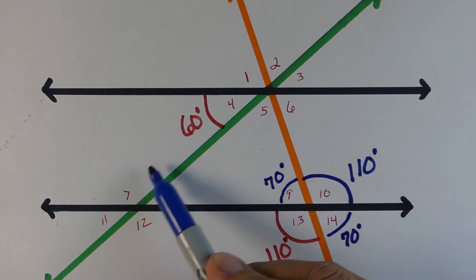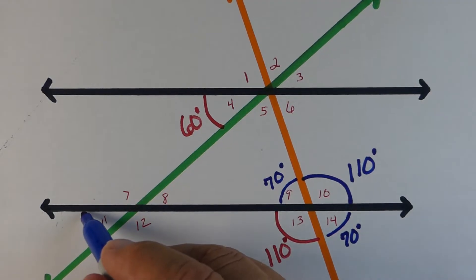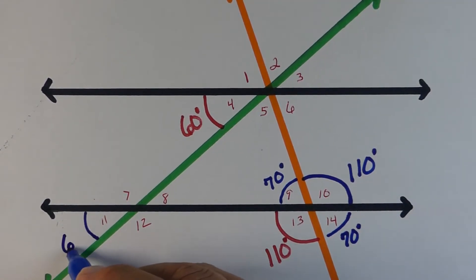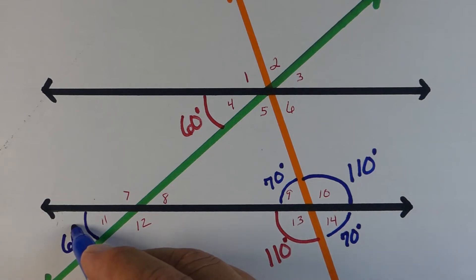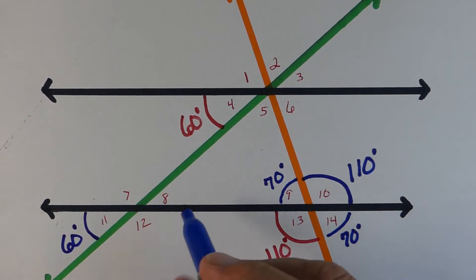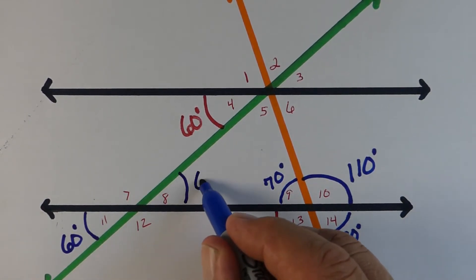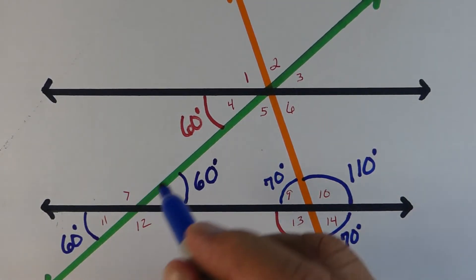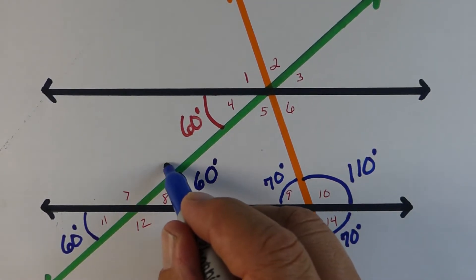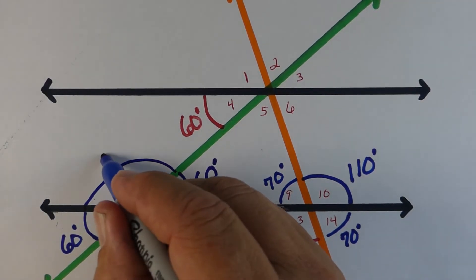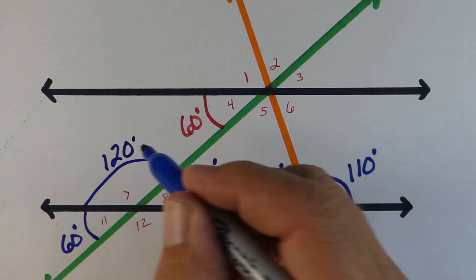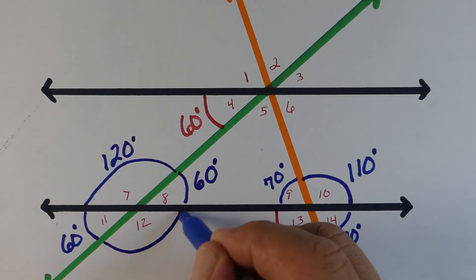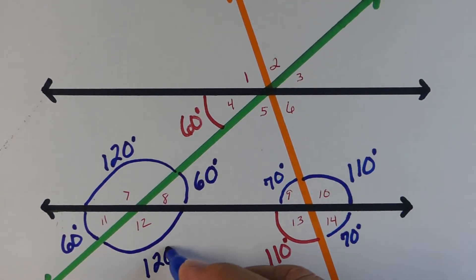Next we look at the 60 degree angle. Angle four — we can literally just slide it straight down the green transversal and find that angle 11 is 60 degrees. Angles 11 and 8 are both vertical angles, so angle 8 is the same as 11 — which is 60 degrees. Angles 7 and 8 together equal 180, so we subtract and get 120 for angle 7, and angle 12 has to be the same — 120 degrees.